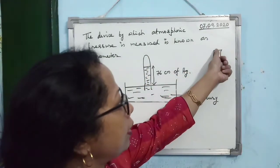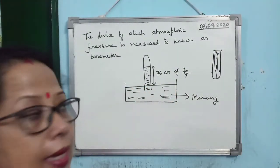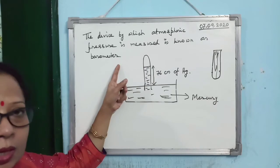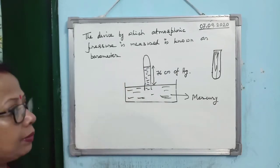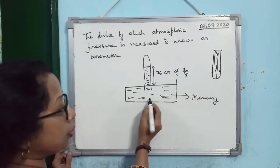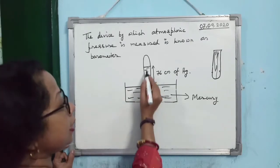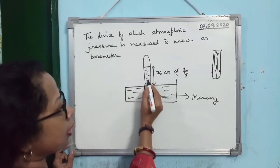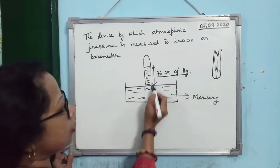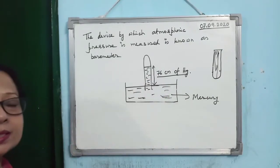Close the test tube with your thumb and invert it inside the mercury-filled container, supporting it with a stand and clamp. When you invert the completely mercury-filled test tube, the mercury level inside falls and attains a height of 76 cm from the mercury surface in the container to the top of the column.